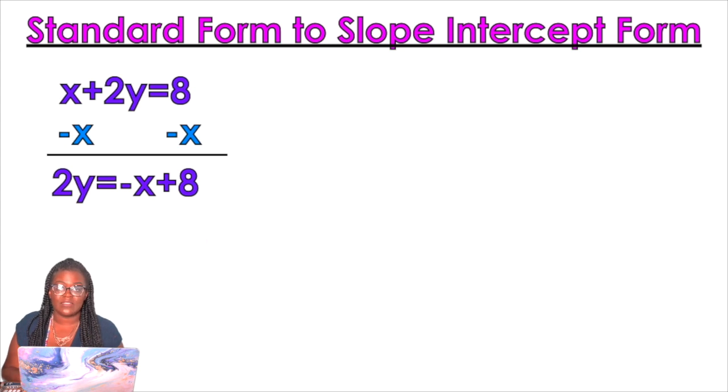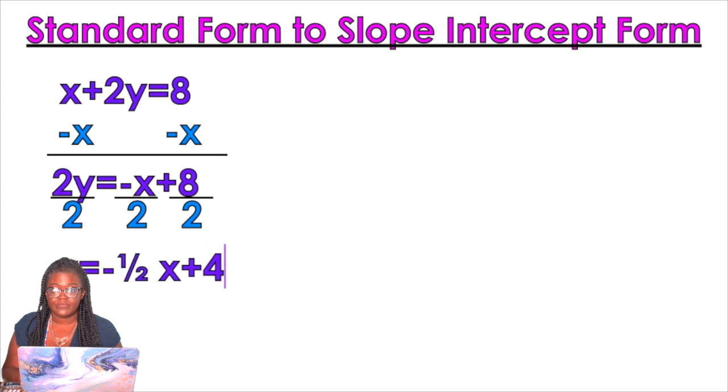Get rid of the x. Get rid of the coefficient. Y equals negative 1 half x plus 4. X minus 2y equals negative 4.